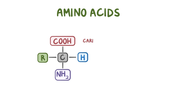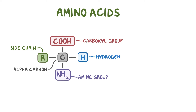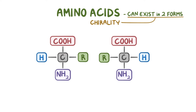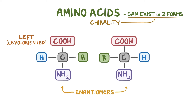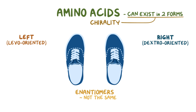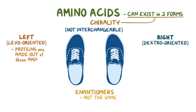So amino acids are essentially a carboxyl group, an amine group, a side chain, and a hydrogen, all bound to an alpha carbon. There's an interesting geometric property called chirality, which means that each amino acid can exist in two forms that look like mirror images of each other. These two forms are called enantiomers. We have the left, or levo-oriented amino acids, as well as the right, or dextro-oriented amino acids. Think of it like a pair of shoes—even though they're made from the same materials, the left and right shoe are not interchangeable. As it turns out, proteins are only made out of levo-oriented amino acids.